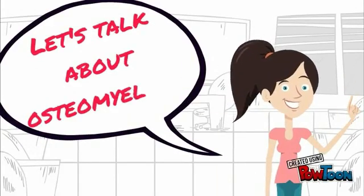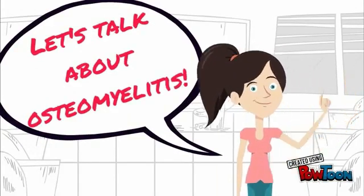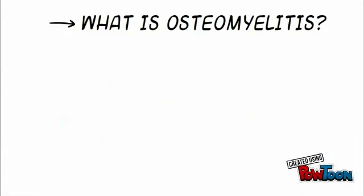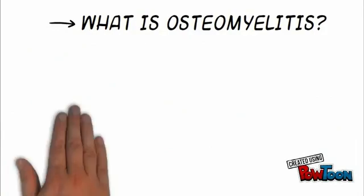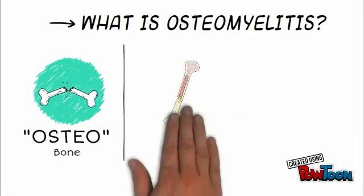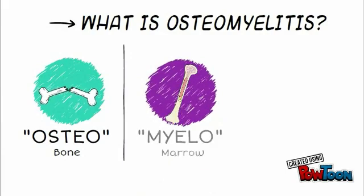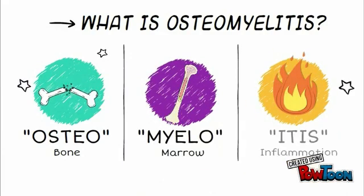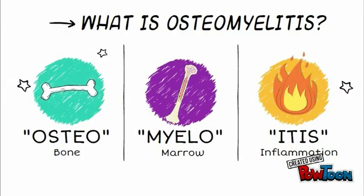Today we are going to be talking about osteomyelitis. If we break down the word, osteo means bone, myelo means marrow, and itis refers to inflammation. Therefore, osteomyelitis means inflammation of the bone and bone marrow.